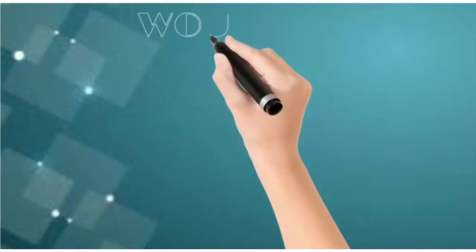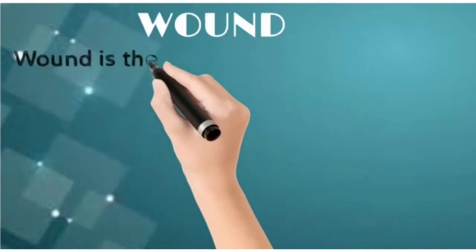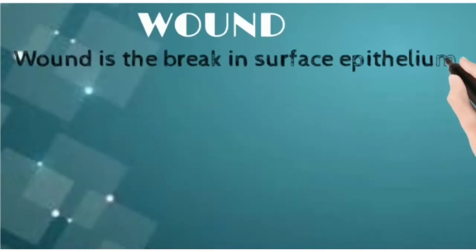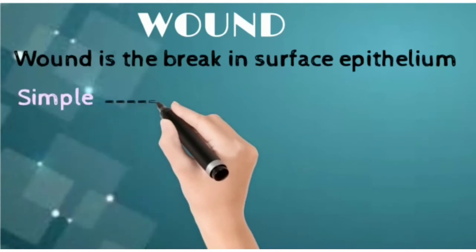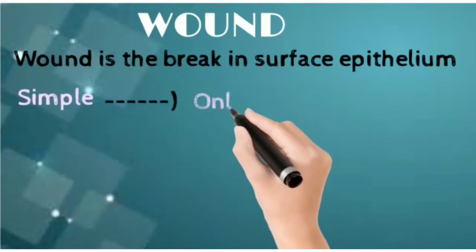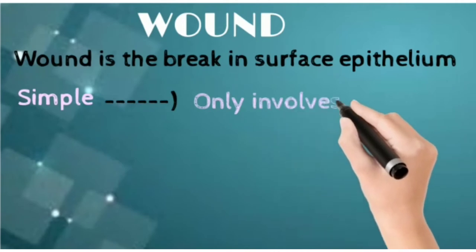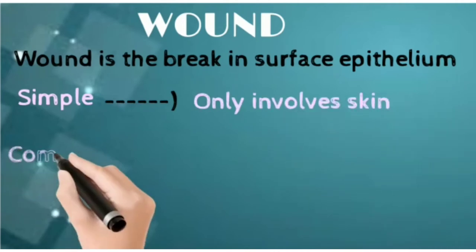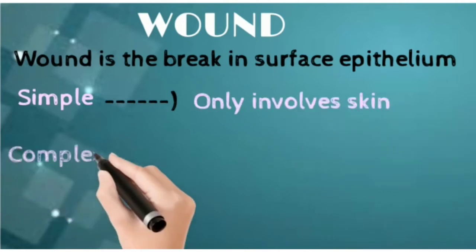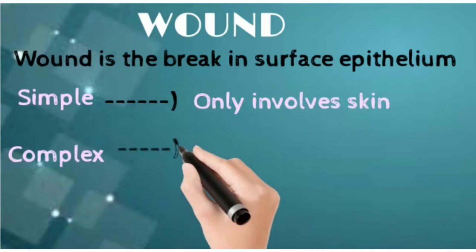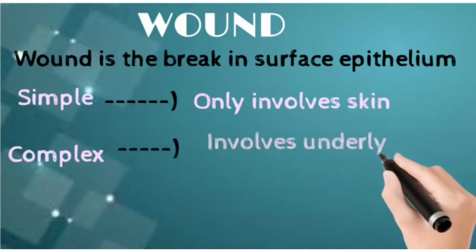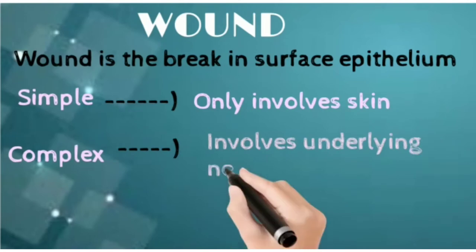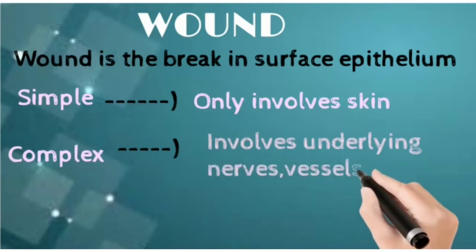In this video I am going to discuss about wounds. I have made two videos for this chapter and this is the first video. A wound is basically the discontinuity of epithelium or the break in the surface epithelium. It is of two types: one is simple, which involves only the skin, and the other is complex, which involves the underlying vessels, the tendons, and the nerves.